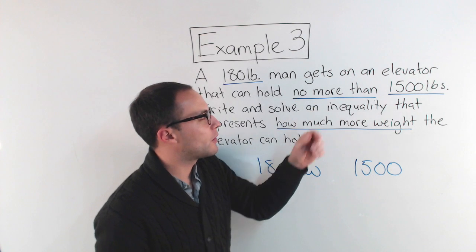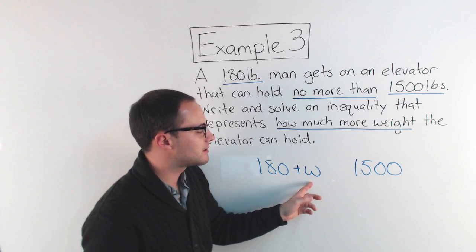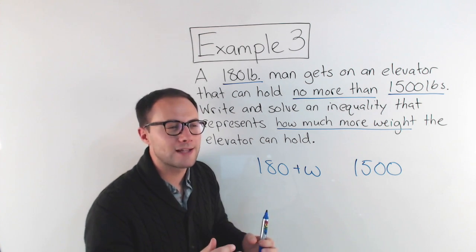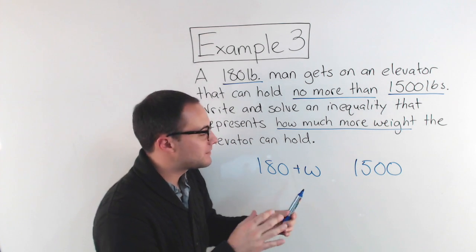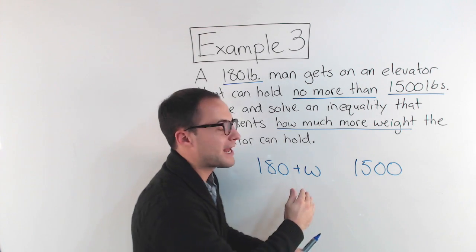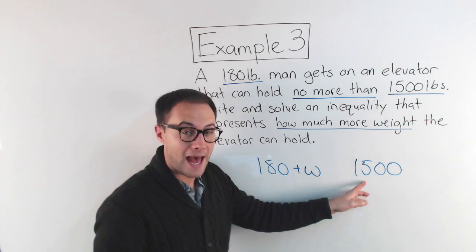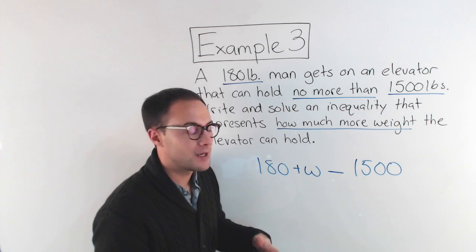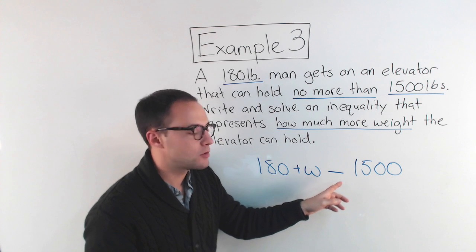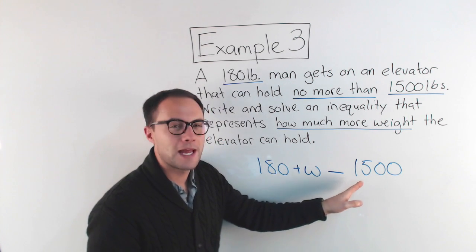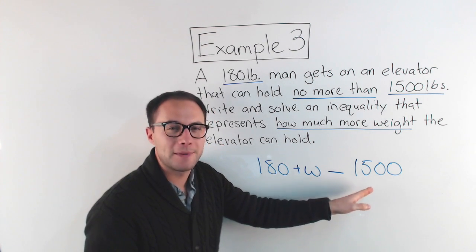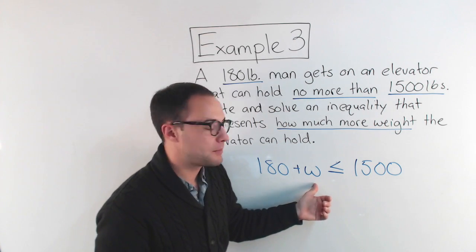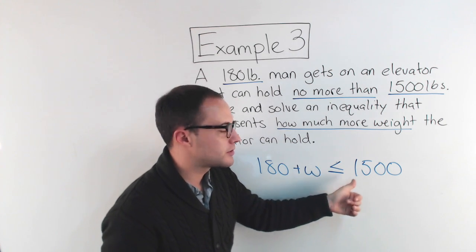Now I've got to think, okay, what is no more than? 180 plus W has to be no more than 1,500 pounds. You can think of no more, that's like a maximum. 1,500 pounds is the maximum. We can't have more than that. We can have 1,500, that's okay. So I'm going to have, I know it's going to be or equal to. Now I'm just wondering, is it going to be greater than or equal to or less than or equal to? Well, if it can't be more than 1,500, that means it has to be less than that.